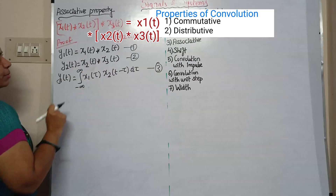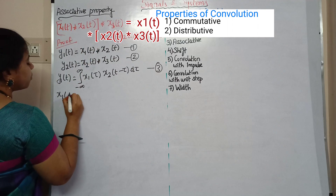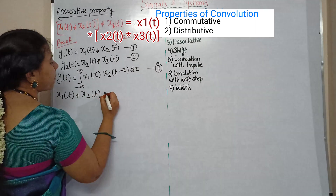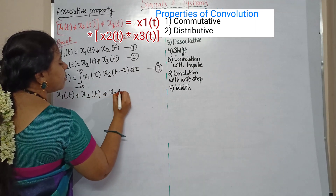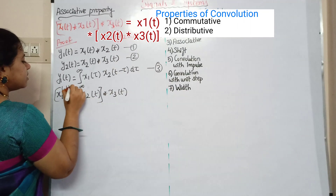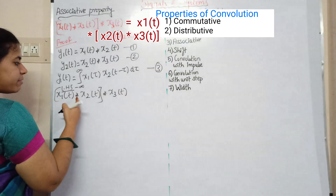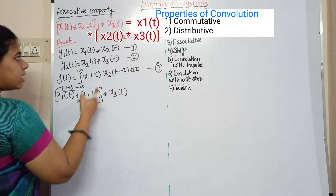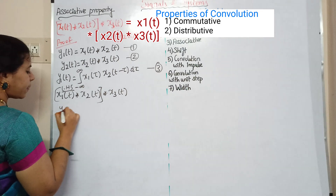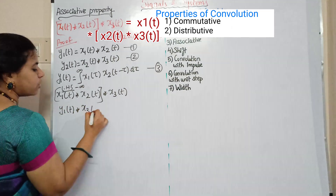Now the LHS will be addressed: x1(t) convolution x2(t) convolution x3(t). So x1(t) convolution x2(t) equals y1(t), and y1(t) convolution x3(t).